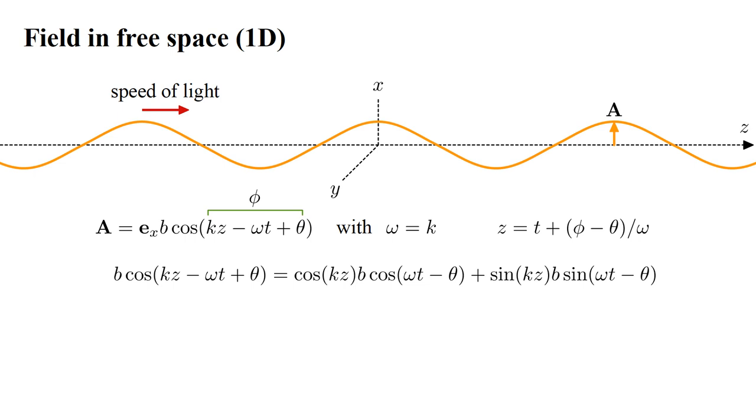We can apply a sum of angles trig identity to write b cos(kz - ωt + θ) as the sum of two terms: cos(kz) times b cos(ωt - θ) plus sin(kz) times b sin(ωt - θ). Let's denote by q the amplitude b cos(ωt - θ). The time derivative, q̇, is -bω sin(ωt - θ).